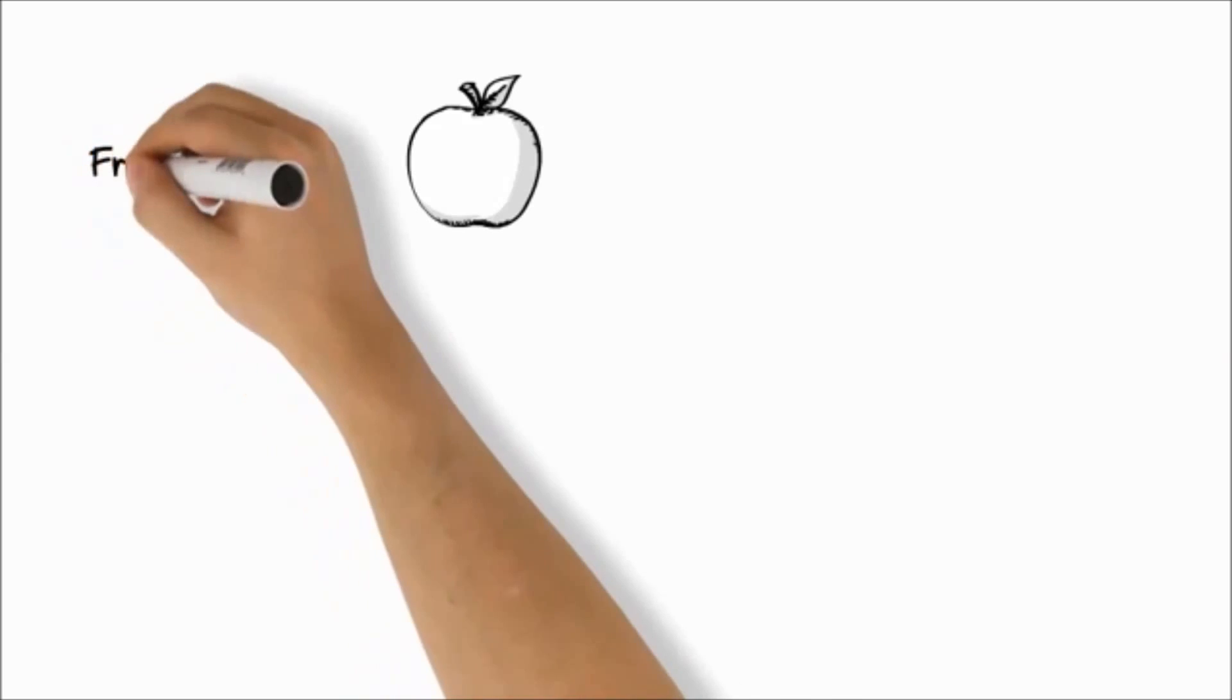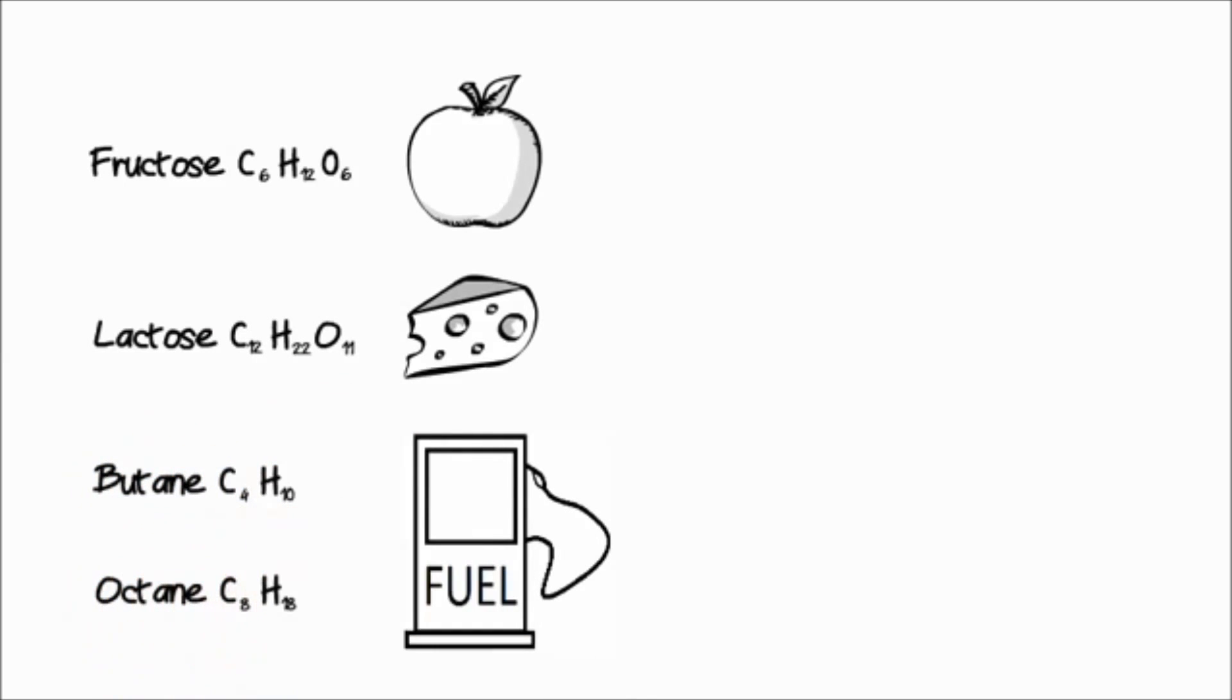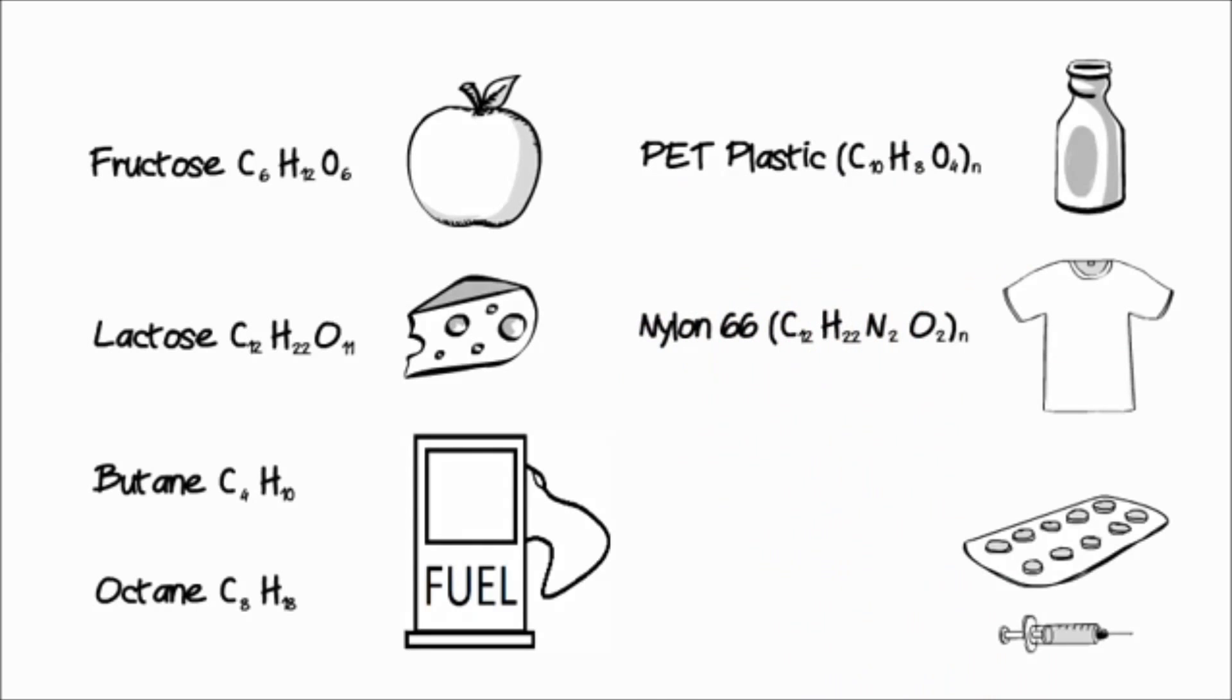Organic compounds can be found almost everywhere. Carbohydrates, proteins and lipids in food. Hydrocarbons in energy and fuels. Polymers in plastics and clothing. And pharmaceuticals like paracetamol, aspirin, ibuprofen and many others.